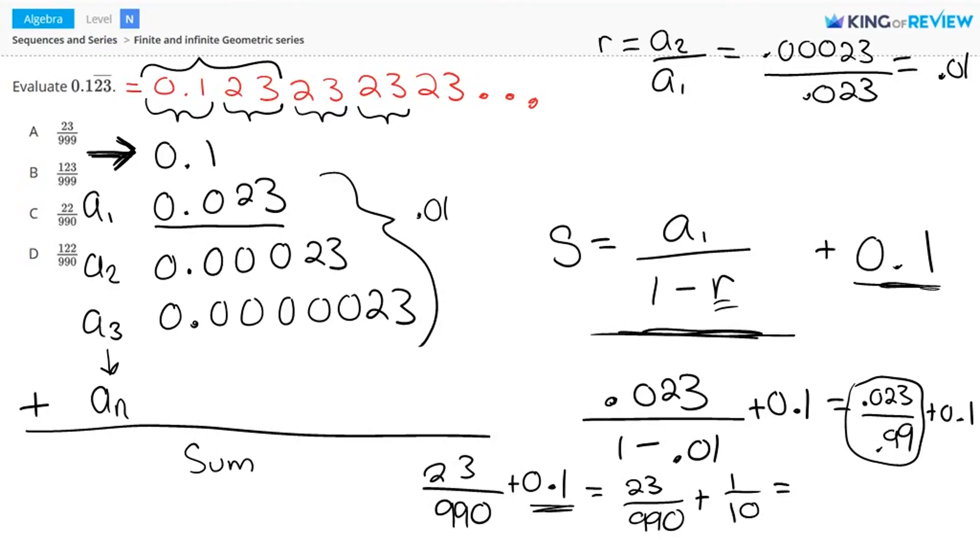And the next step is to find the least common denominator so that I can combine these fractions. So I have 23 over 990 plus 99 over 990.